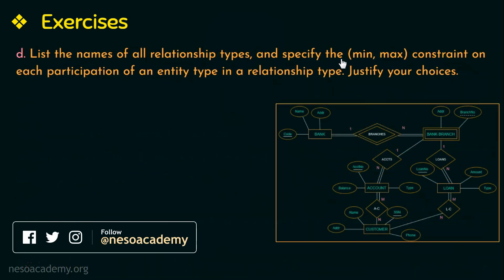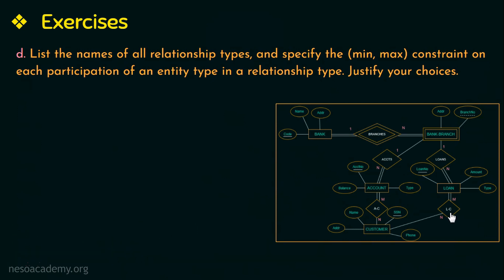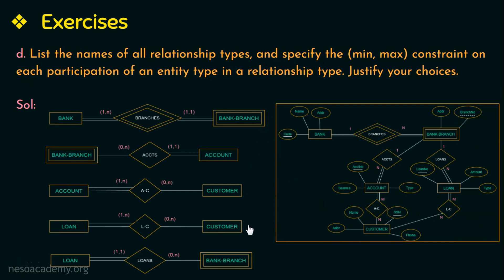The fourth question is: list the names of all relationship types and specify the min-max constraint on each participation of an entity type in a relationship type, and justify your choices. First, let us identify all relationship types in this diagram: branches, accounts, loans, AC (account-customer relationship), and LC (loan-customer relationship) — five relationship types in total.